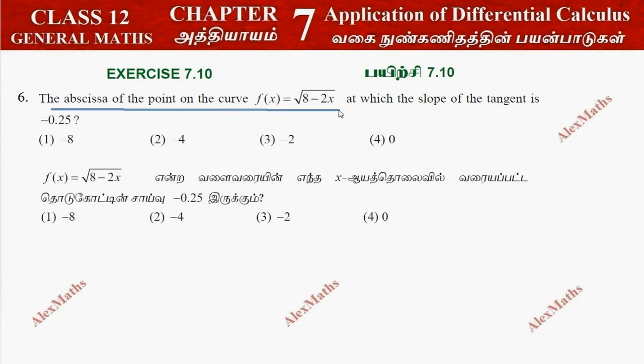The abscissa of the point on the curve - the curve y = f(x) = √(8-2x) - at which the slope of the tangent is... so m = dy/dx. Slope value is -0.25.